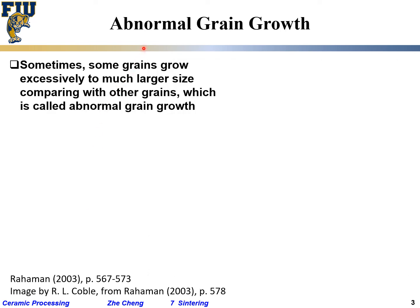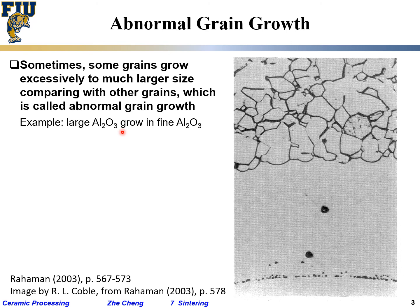Sometimes people observe so-called abnormal grain growth, where certain grains grow excessively — much much larger than all the other grains. One example is a very large aluminum oxide or alumina grain growing in fine alumina. You can see that most grains are more or less comparable in size, but suddenly there is a huge grain — this is called abnormal grain growth.